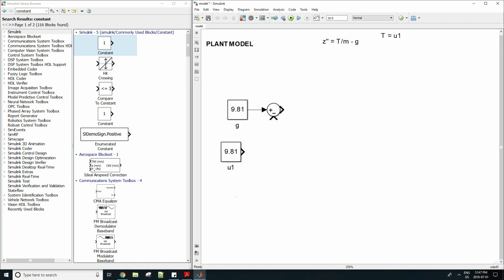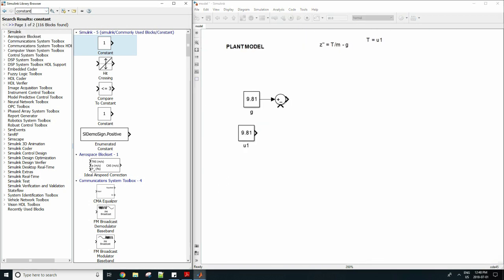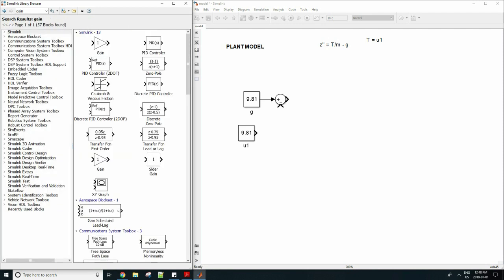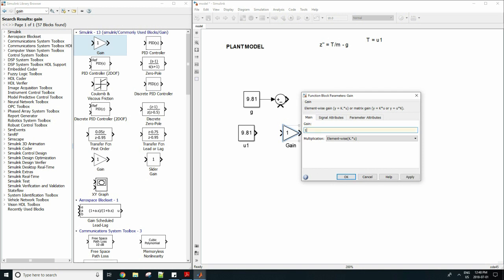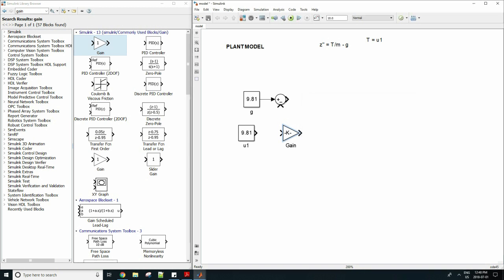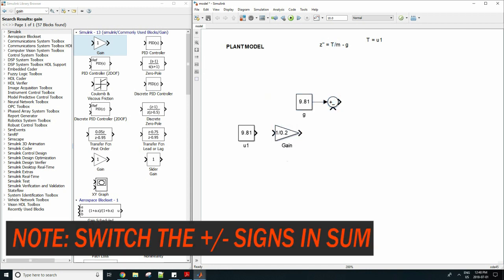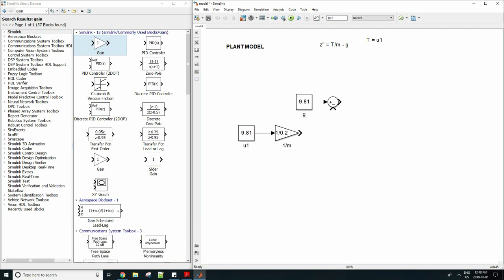So u1 equals your force which is a control input and you can drag it in there. That will go into your plus sign but we need to multiply it by 1 over m so we need a gain block to accomplish this. Mass equals 0.2 kilograms as defined in the problem statement. So drag it in the plus sign and we can then perform a double integration because we have z double dot and we need z.